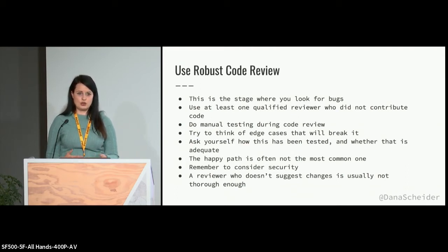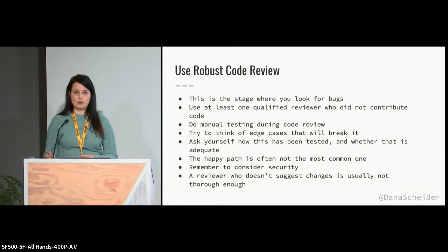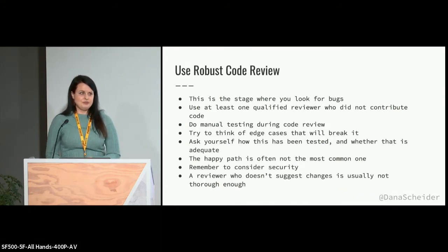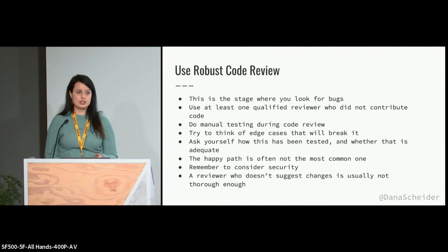Look at the test coverage — see if it's adequate to make sure that if you break something, it will show. A lot of the time when we test things, we think about the happy path, but the happy path is often not the one that a customer takes. At one company I worked for, we found out that only 5% of customers using the app went through the happy path, so definitely take other possibilities into consideration. A reviewer who doesn't suggest changes is usually one who's not thorough enough — generally speaking, if it's a larger pull request, there's going to be something that can be improved, and it's the job of code reviewers to find it.